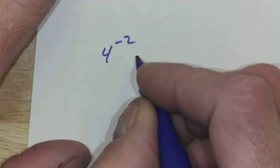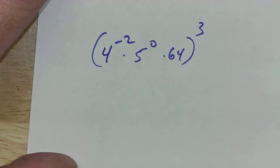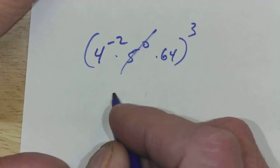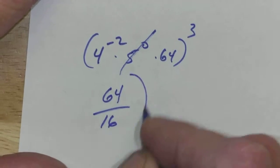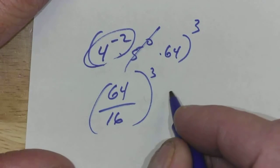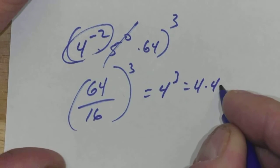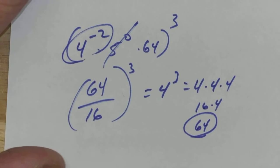So I've got 4 to the negative 2, 5 to the 0, times 64, and I'm going to take all that and cube it. What's 5 to the 0? 1, so that's gone. 4 to the negative 2 says divide by 4 twice. So I get 64 over 4 squared, which is 16, and I'm going to cube that. Remember, this means put it on the bottom. 64 divided by 16 is 4. 4 cubed, 4 times 4 times 4, 16 times 4, 64. You're welcome. Good job.